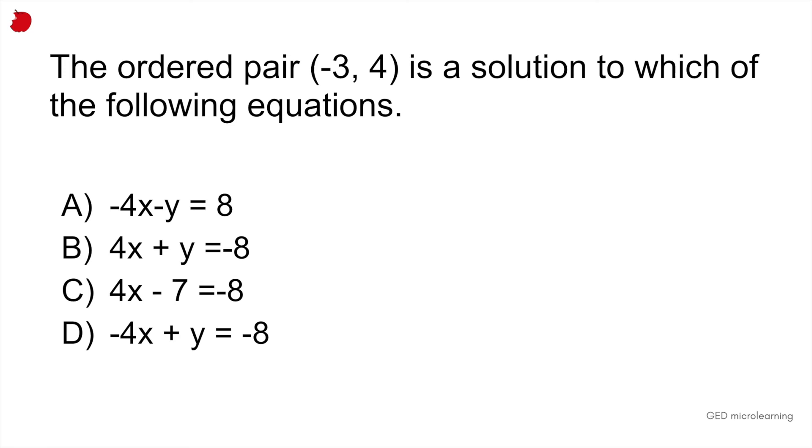So remember that when they give you an ordered pair, what this is telling you is that they're giving you a value for x and they're giving you a value for y. And it's always in that order, in alphabetical order, x followed by y. So all you have to do is take those values and then plug them into your equation until you get the correct answer.